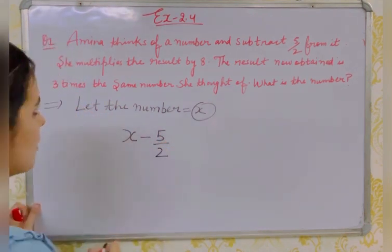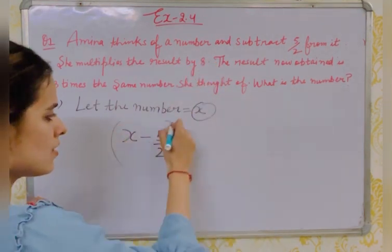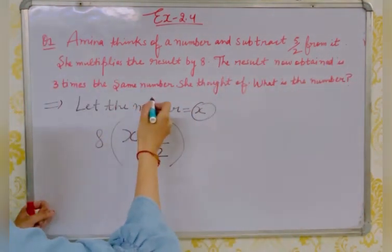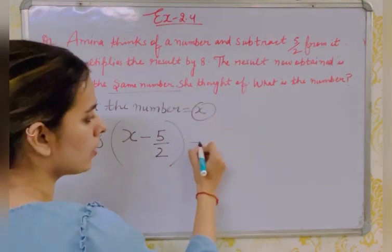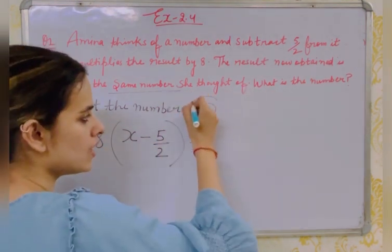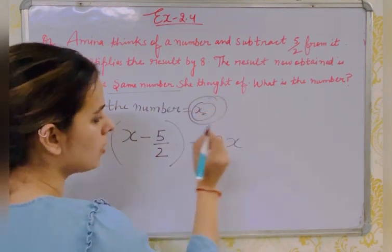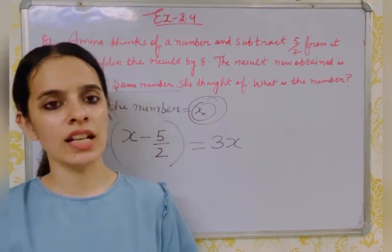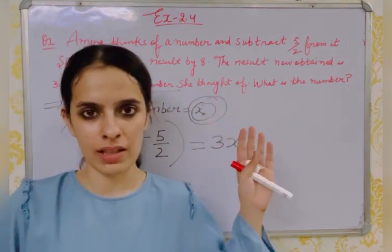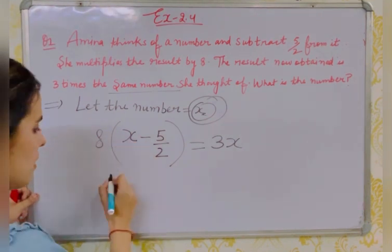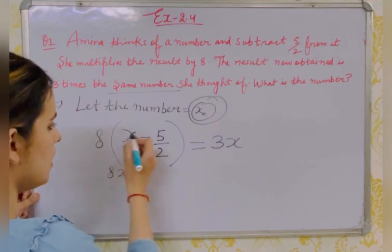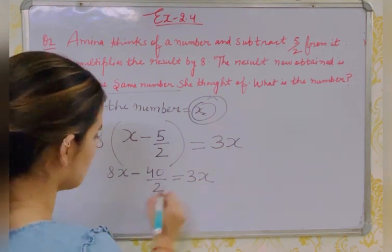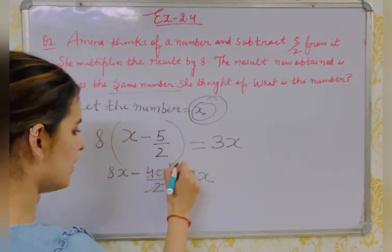She multiplies the result by 8, giving us 8 times (x − 5/2). The result now obtained is 3 times the same number, so this equals 3x. Expanding: 8x − 40/2 = 3x, and 40/2 = 20. So we have 8x − 20 = 3x. Variables go to the variable side and constants stay.